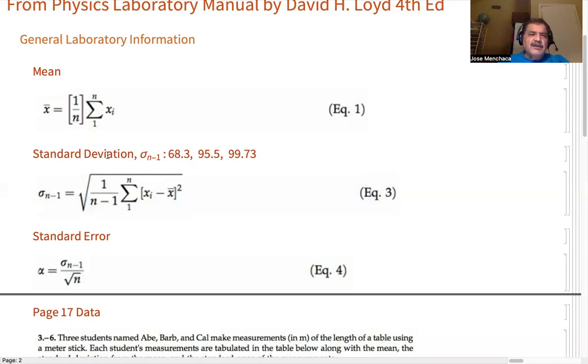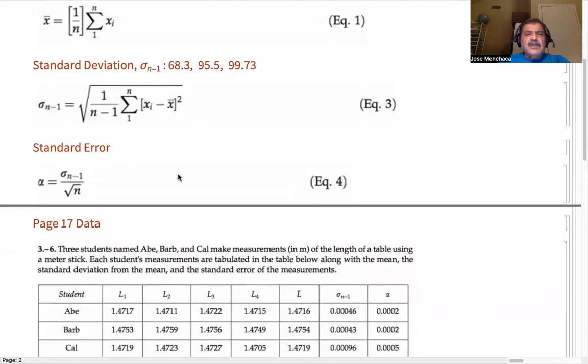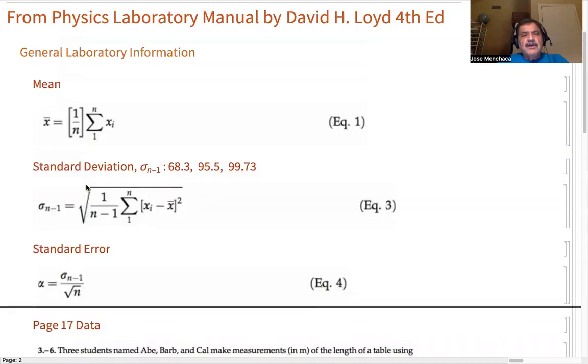So that's what standard deviation is. And then the standard error is this equation four, the standard error alpha is equal to the standard deviation divided by the square root of n. In this case, the square root of four, which is two. You take your standard deviation and divide it by two. So these are the formulas that are used.